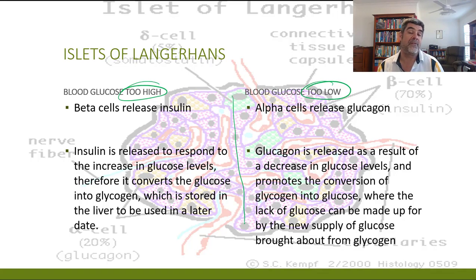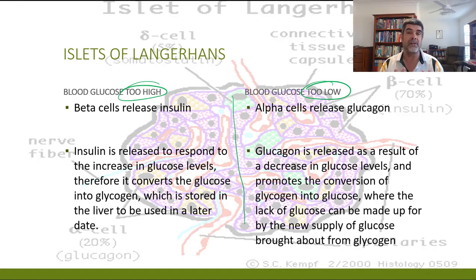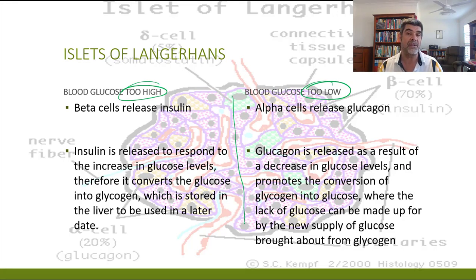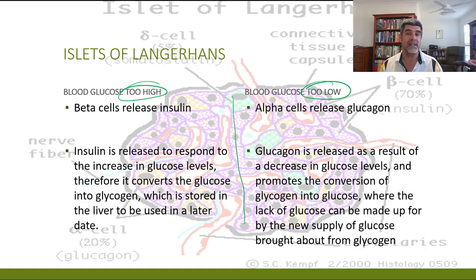It's really important for both temperature and blood glucose levels that you have a couple of simple diagrams you could reproduce in an exam and talk about how these two very important requirements of our body are maintained at steady levels by homeostatic mechanisms. Thanks for watching.